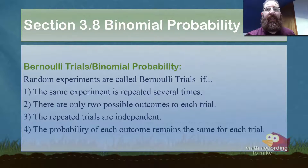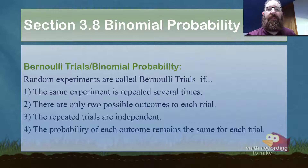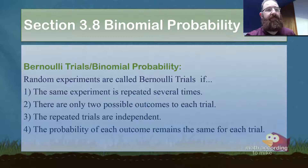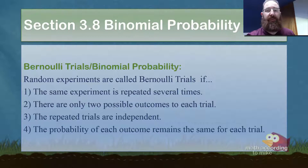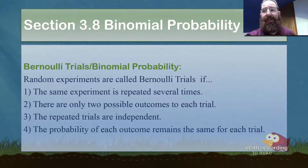Without all four, you might have a probability that deals with a permutation or combination, or just regular old counting. All four of these must be present in order to have a Bernoulli trial. If you need to, pause the video to make sure that you've got all of them down.